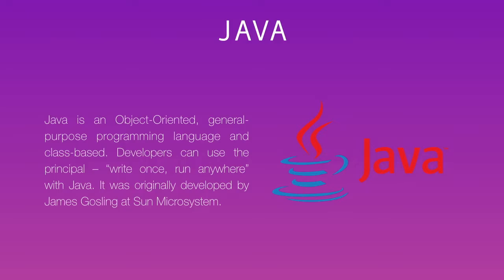Java was created for the purpose of multi-platform, which means platform-independent programming. Back in the 1990s, there was a problem where compiled-based languages like C++ and C dominated, but the problem is they cannot be transferred from one platform to another — you need to write separate code for each platform.